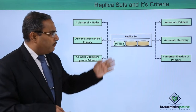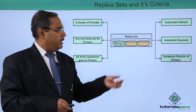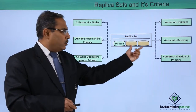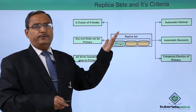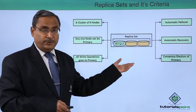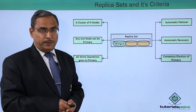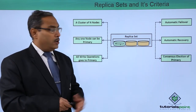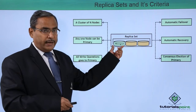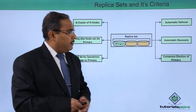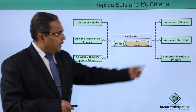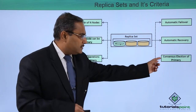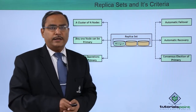Automatic failover means that if the primary node goes down, any one of the remaining secondary nodes will be treated as the new primary node. An election will take place so that a secondary node is selected as the primary after the failure of the current primary. This gives us automatic failover, automatic recovery, and consensus election of a primary.